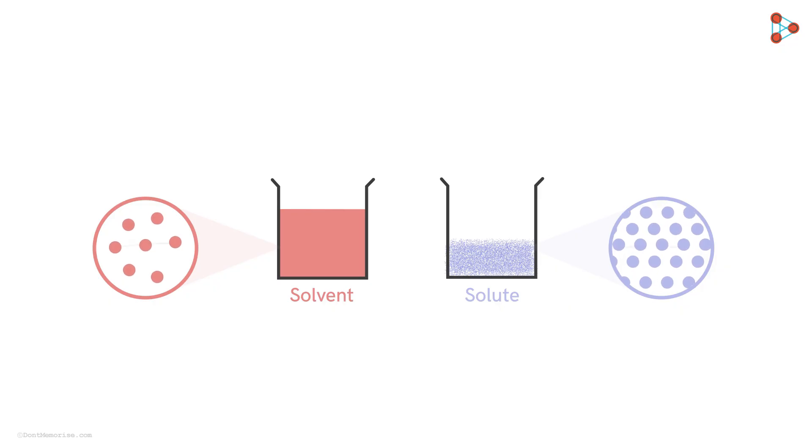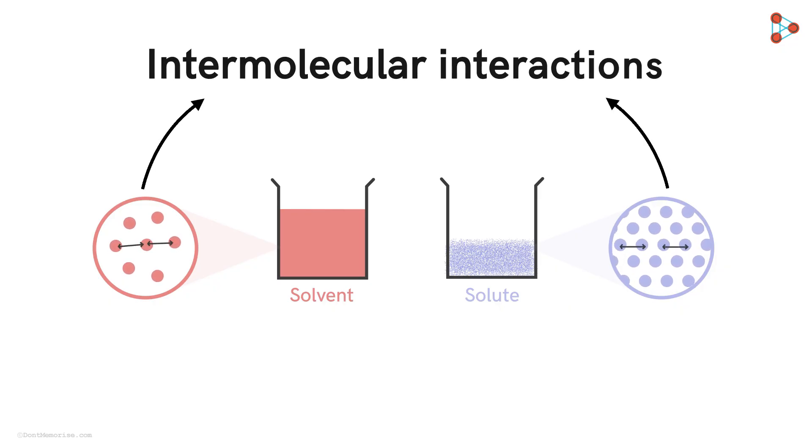We know that the molecules of a substance attract each other. So here, there will be attractive forces acting between the solvent molecules and similarly between the solute molecules. We denote the interaction between the solute molecules as solute-solute interactions and similarly for the solvent as solvent-solvent interactions.